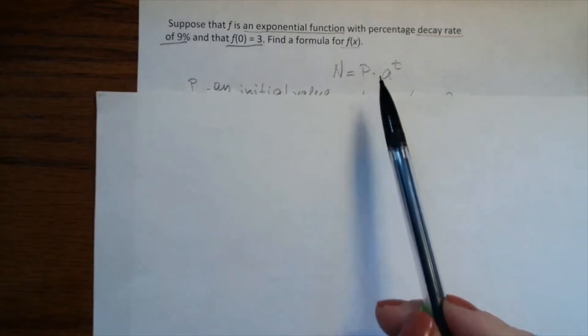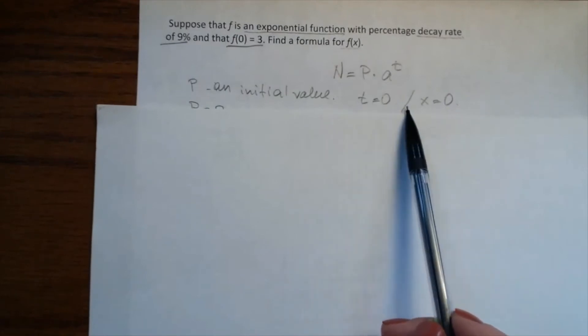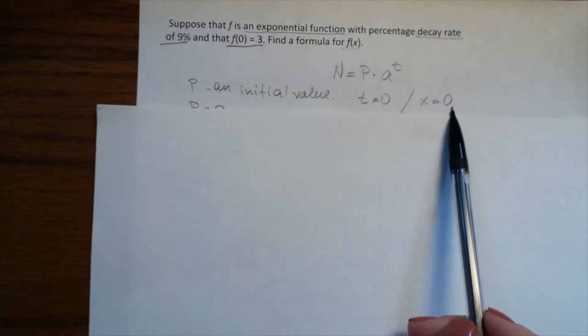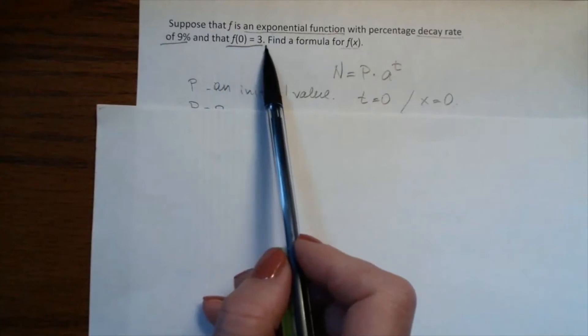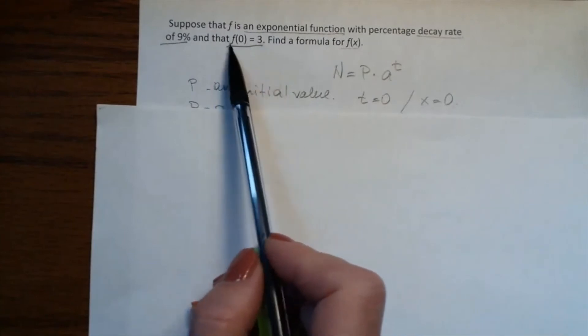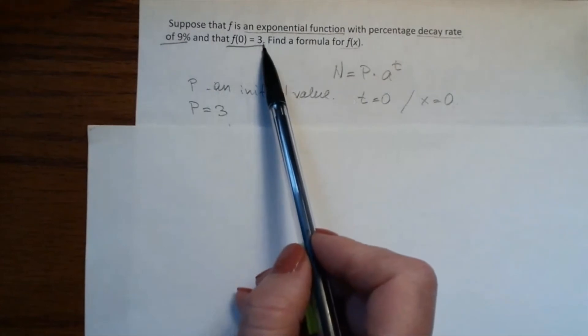P is the initial value when t = 0 or x = 0. In our case, x = 0, and the initial value is given. So P = 3.